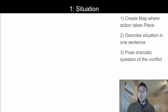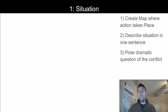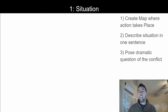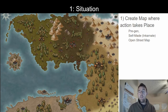For situation, what we're going to do is create a map about where the action takes place. You don't have to go crazy and make an entire world map — you could make just a small subsection of a continent or a forest, really scope it to how grand your bad guy is and where the action is taking place. The second component is to describe the situation, trying to condense it down into one sentence. Then we'll pose a dramatic question about the conflict, which will help us get ideas about what the adventurers are actually being asked to do.